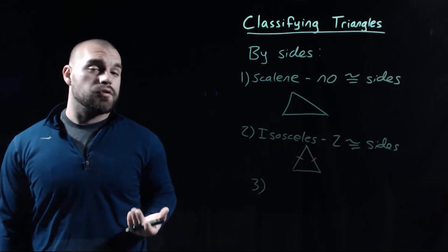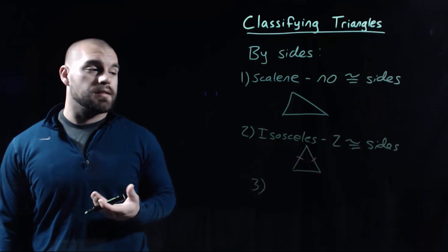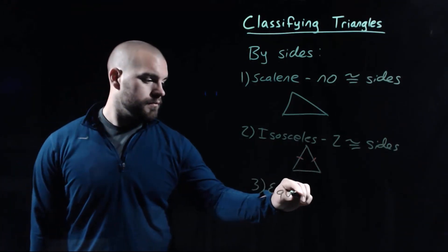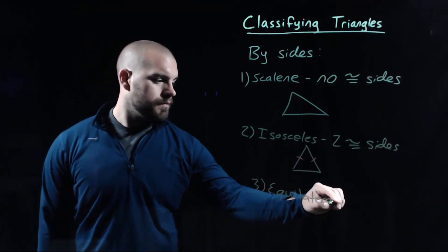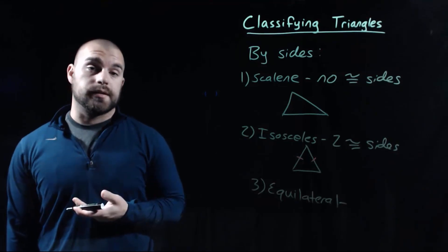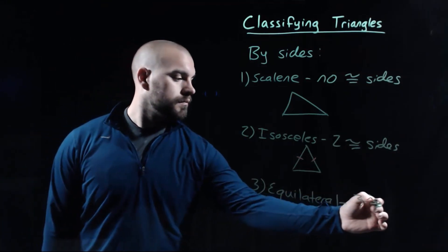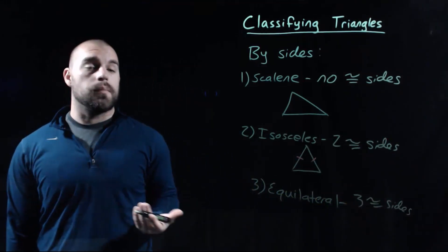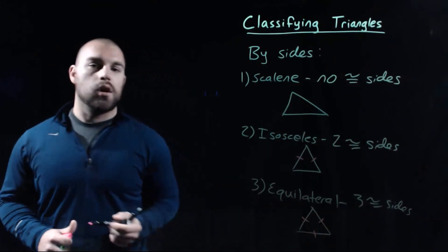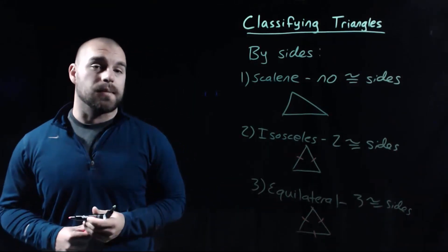The third kind of triangle when classifying by side lengths is an equilateral triangle. In an equilateral triangle all three sides are congruent, so all three sides have to be exactly the same length.